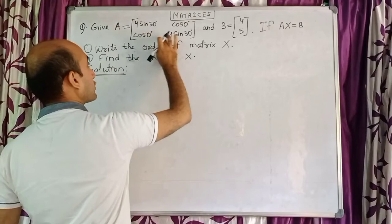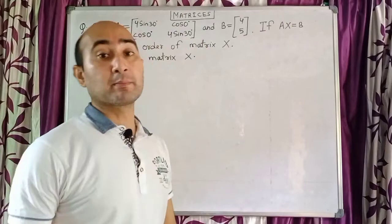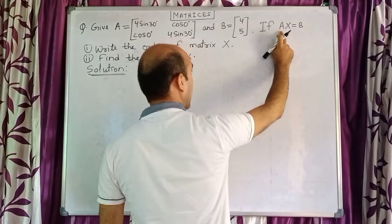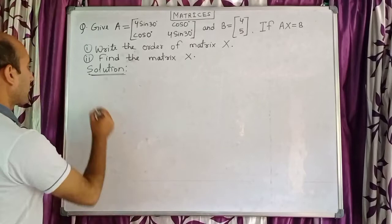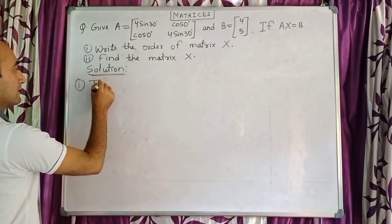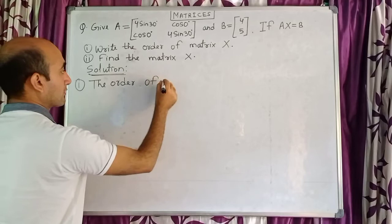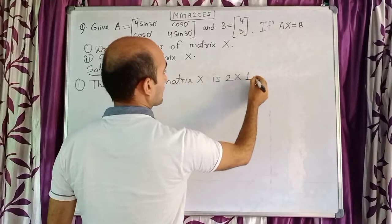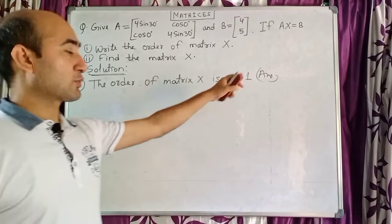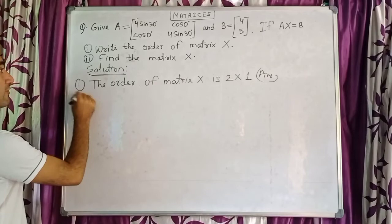Since A is 2×2 and B is 2×1, matrix X will most probably also be 2×1. The reason is: when a 2×2 matrix multiplies with a 2×1 matrix, the result is also a 2×1 matrix. So the order of matrix X is 2×1. That is our first answer.